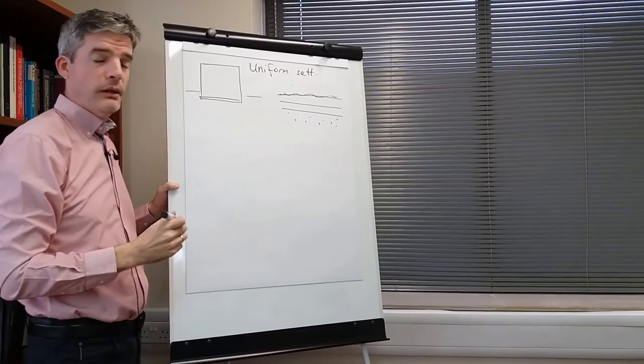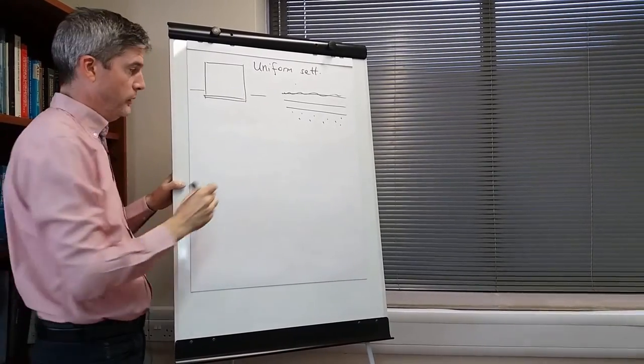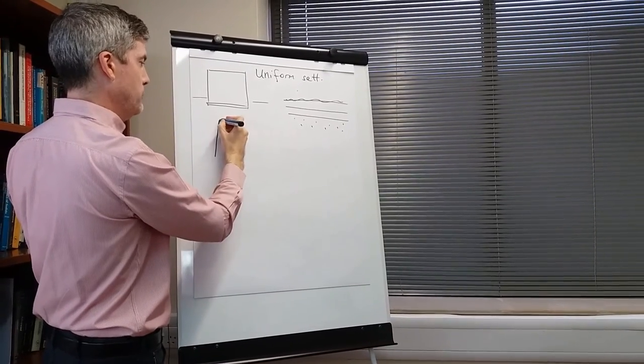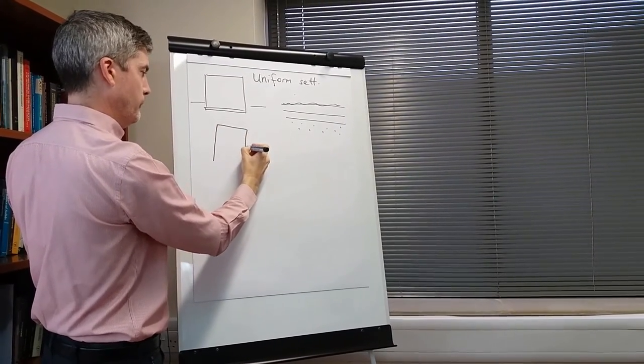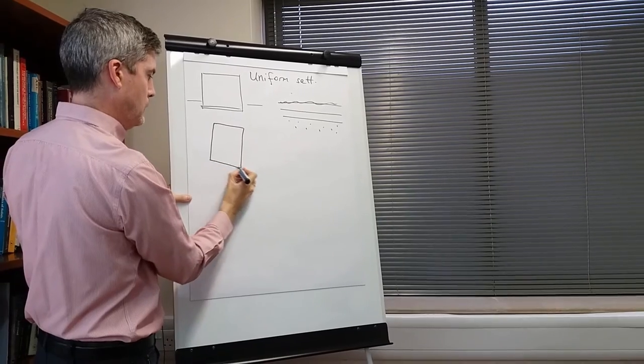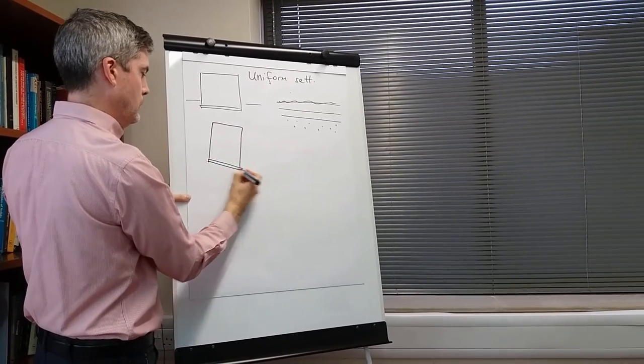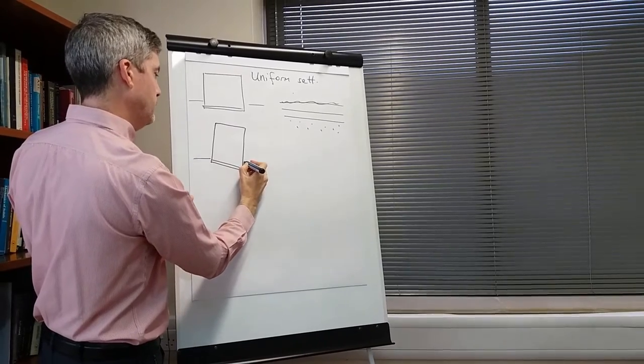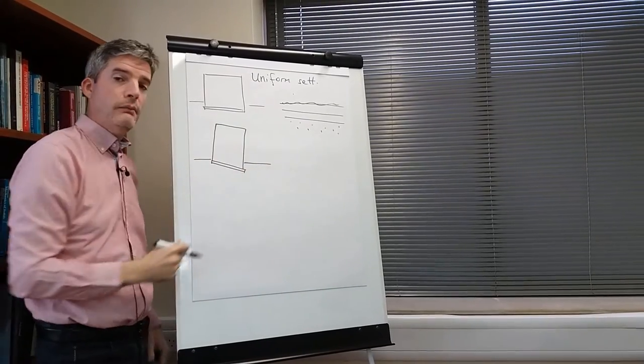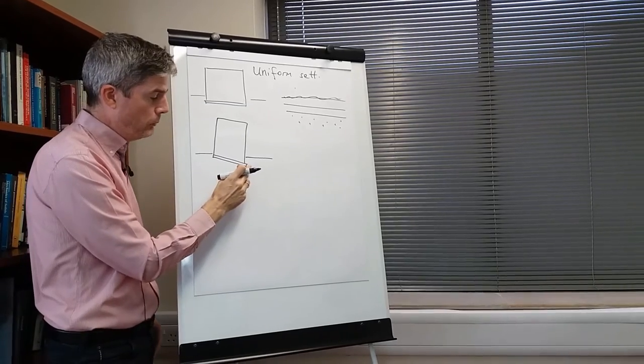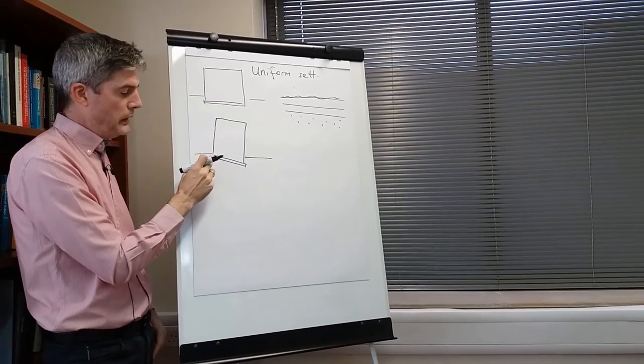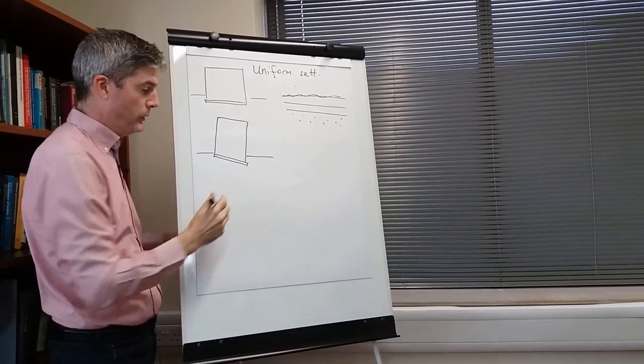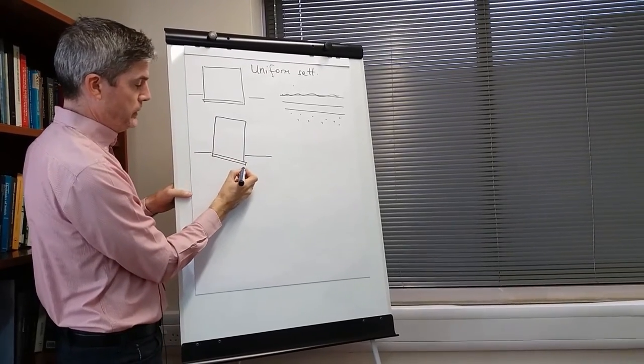Next we come to differential settlement. And this is what is often quoted in specifications as a performance criterion. So here we have a building that has settled again, but this time not in a uniform way. It has settled more on this side than it has on this side. So that is differential settlement, and that can be expressed as a slope.